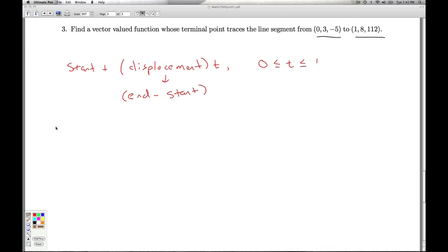Okay, so let's look at each component at a time. Let's look at the x component. x starts off at 0 plus it ends at 1. So the displacement's 1 minus 0 times t. y starts off at 3 plus 8 minus 3 t. z starts off at negative 5 plus it finishes up at 112. And so if I go and simplify this, I get x equals t y equals 3 plus 5t z equals negative 5 plus 117t and once again t is running from 0 to 1.